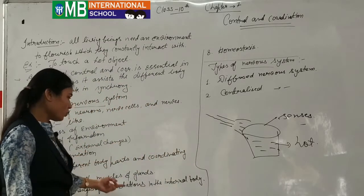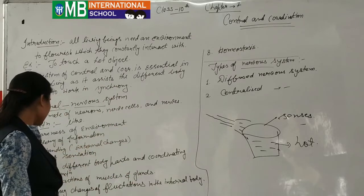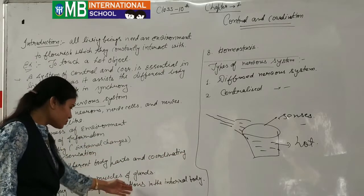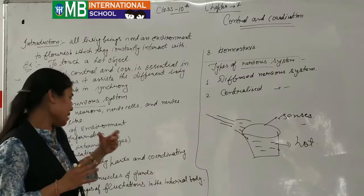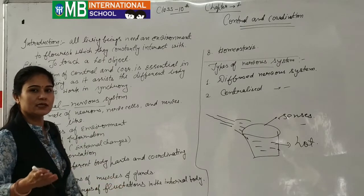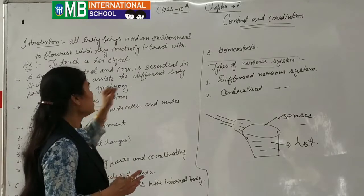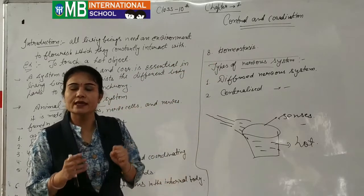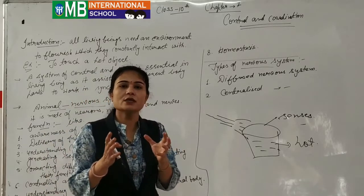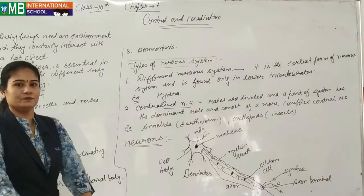Later we will discuss which types of muscles and glands are involved. The sixth function is understanding fluctuations in the internal body — that means changes occurring internally in our body parts. The seventh function is homeostasis, which is related to temperature balancing of our body — to keep our body stable in our external environment.